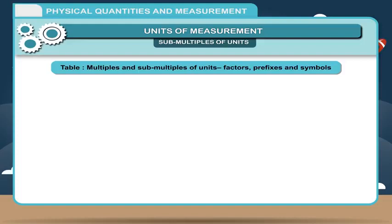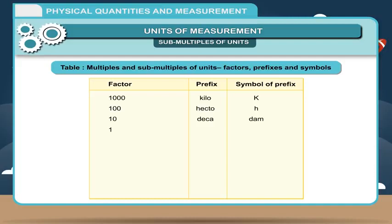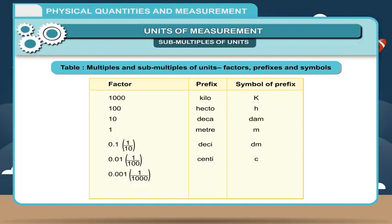Table of Multiples and Sub-multiples of Units — Factors, Prefixes and Symbols: 1000 = kilo (k), 100 = hecto (h), 10 = deka (da), 1 = metre (m), 0.1 = deci (d), 0.01 = centi (c), 0.001 = milli (m), 0.000001 = micro (µ).